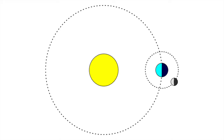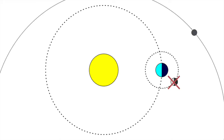If the moon somehow ended up outside of the hill sphere of earth, then the moon would orbit around the sun instead of the earth, just like all of the other planets, asteroids and comets.